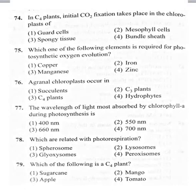79th bit: which of the following is a C4 plant? Option 1 sugarcane, option 2 mango, option 3 apple, option 4 tomato. Mango, apple, and tomato are all C3 plants. Sugarcane is the example of a C4 plant. Correct option is sugarcane, that is the first option.